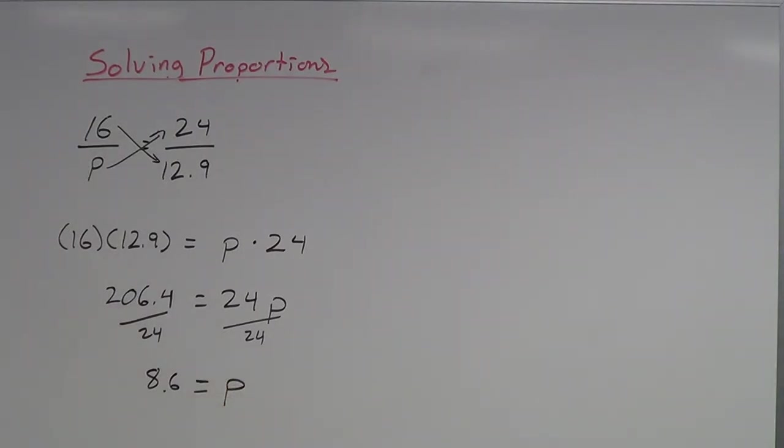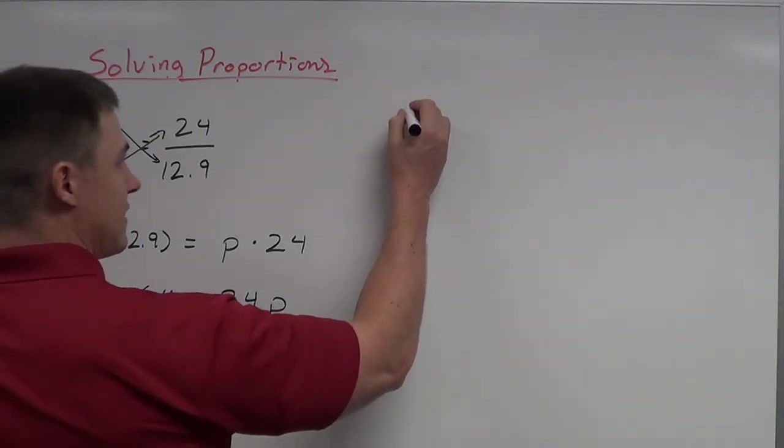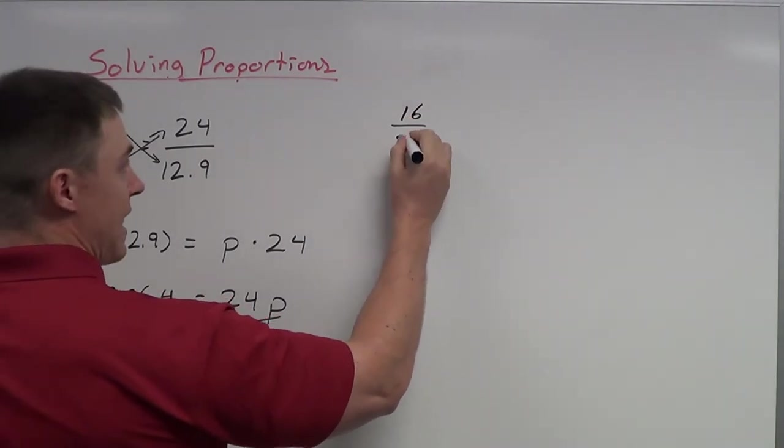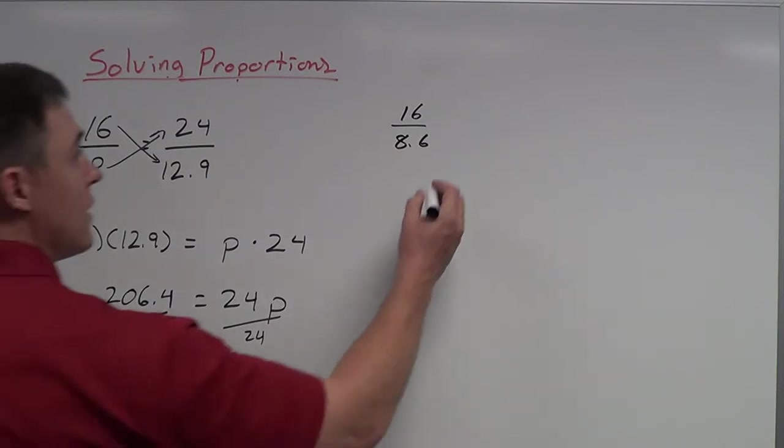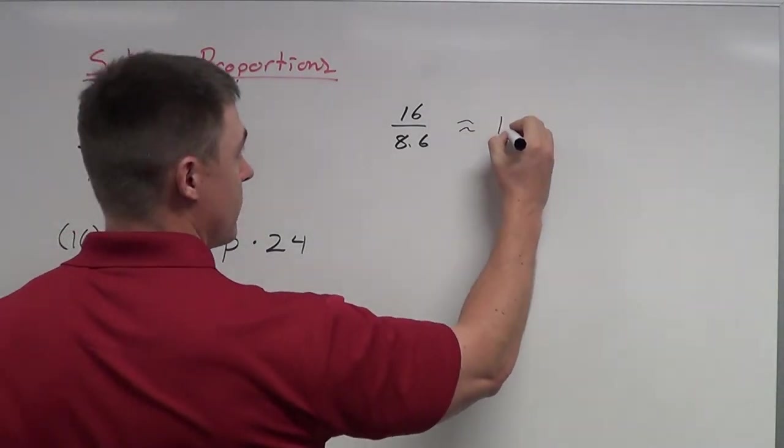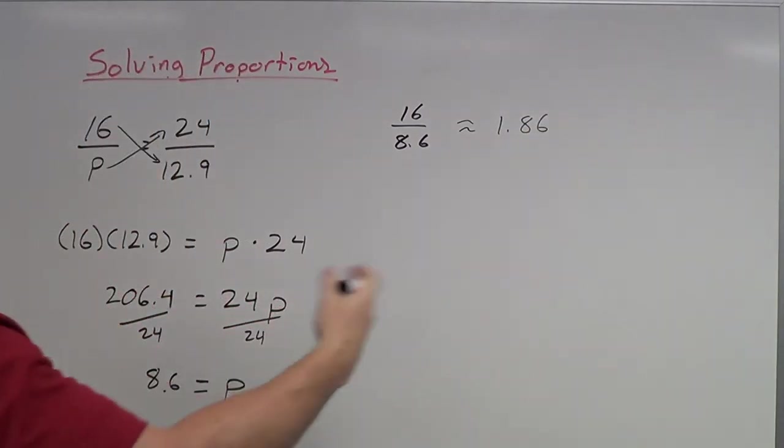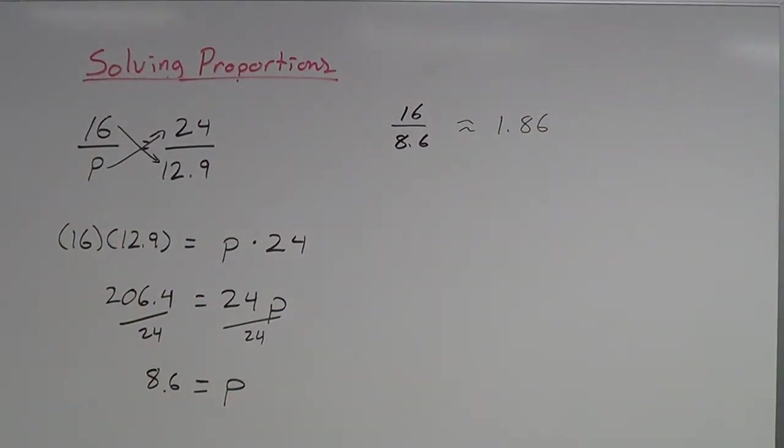Now if you really want to, you can take this and plug it back in to see if it is correct. This is a little bit of a longer process to check this. You take 16 divided by 8.6. So that's the left side of this proportion. And 16 divided by 8.6 is a long repeating decimal. We'll just call it approximately 1.86.